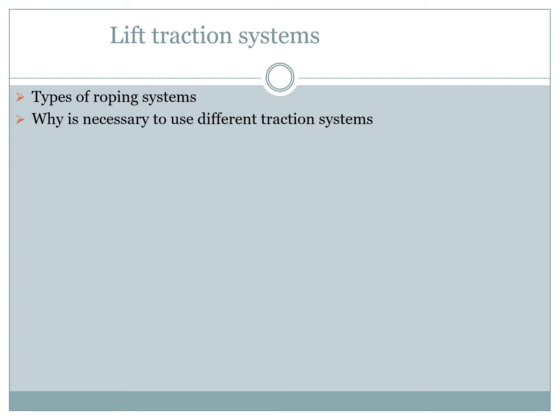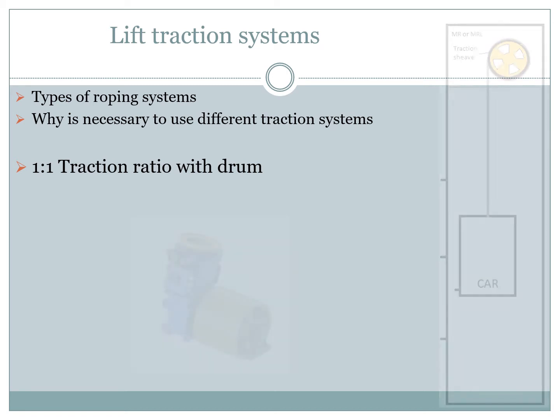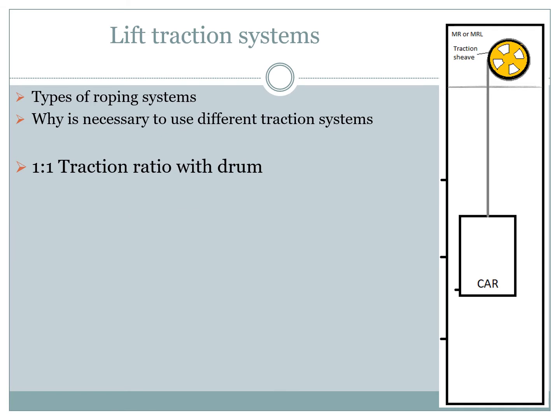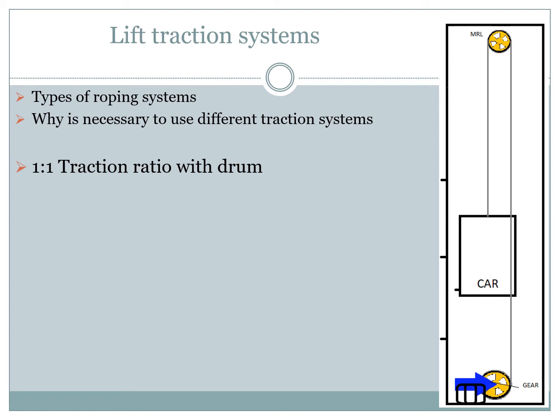The first scenario I will describe is the simplest but not a very common one — a lift with one-on-one traction and a drum gear. The gear is placed on top of the shaft or in the lift room on top of the shaft. The gear can also be placed in other positions, but diverters must be used.